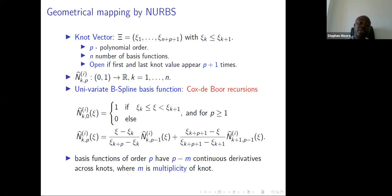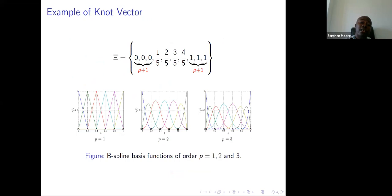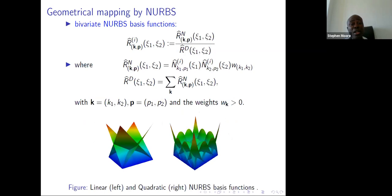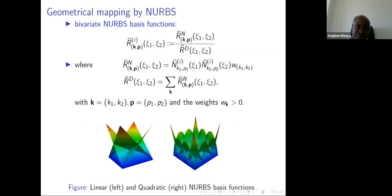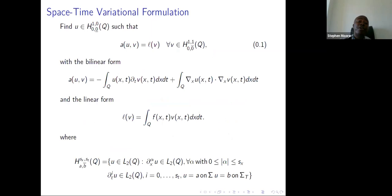This is the 2D case for deriving NURBS. What I'm going to talk about next is the variational formulation of the Spacetime setting. I showed an example of how to derive the bilinear form and the linear form. Here the linear form is just the force vector multiplied by the test function.